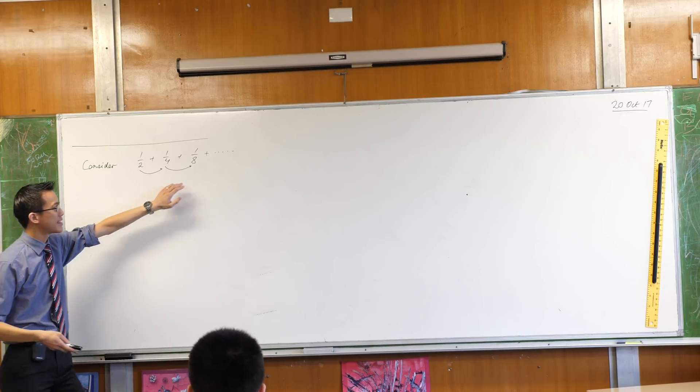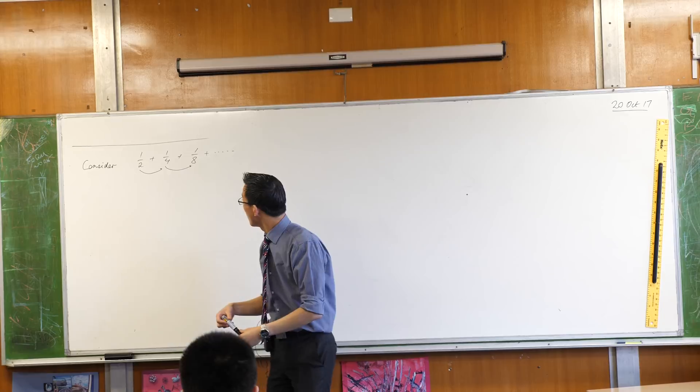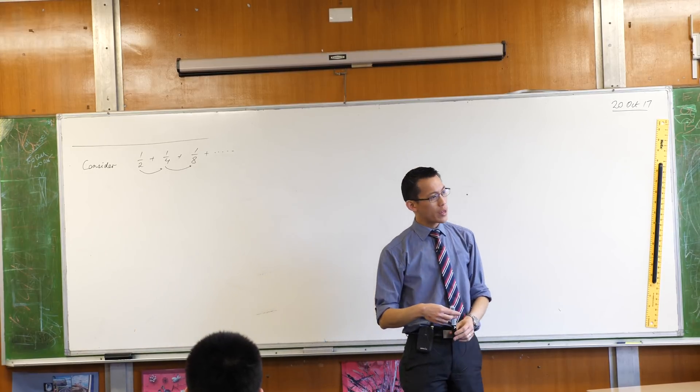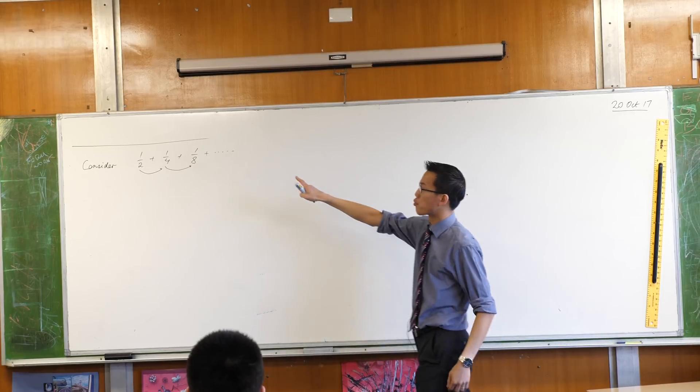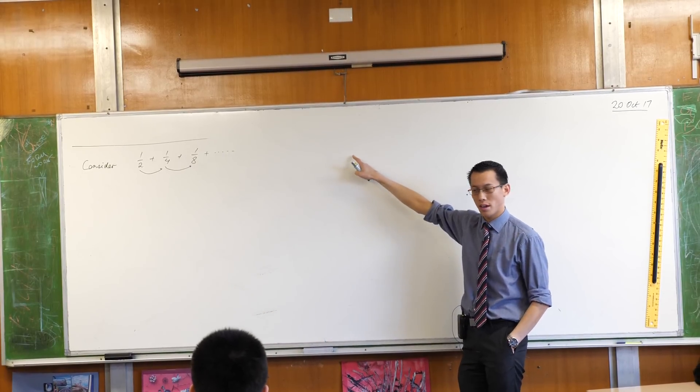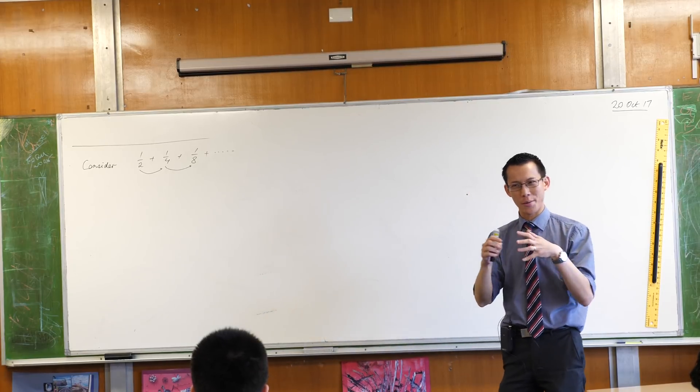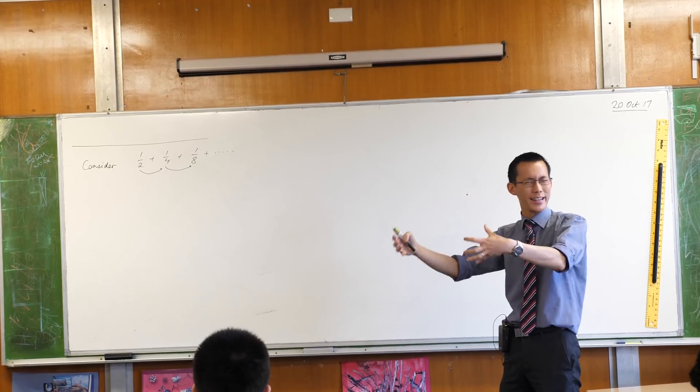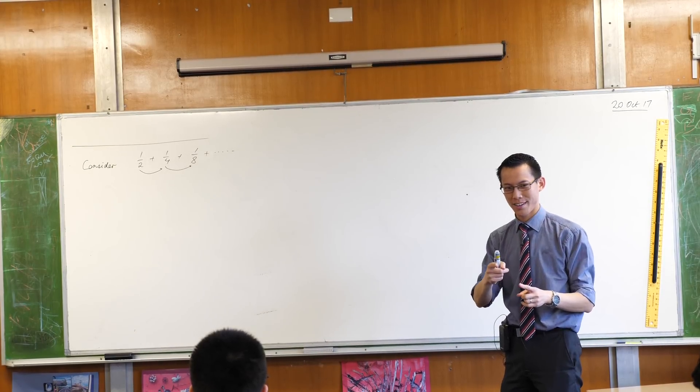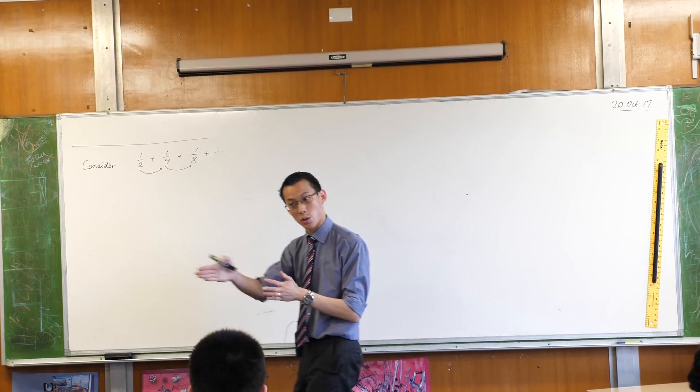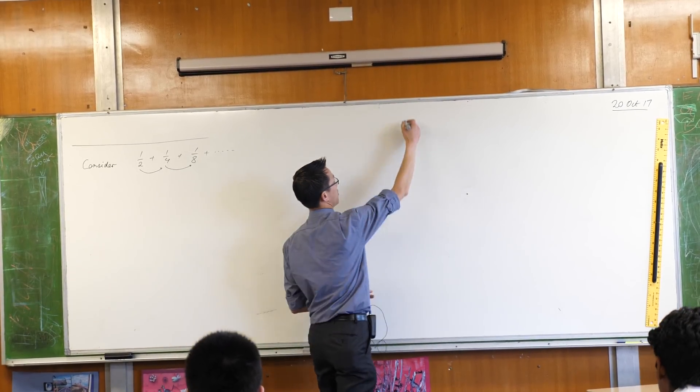So how can we say that it's equal to something, to some number? The way that we can approach this is to think about what happens to this object as we approach infinity. If only I had an area of maths that helped me work out when I approach something, but never quite get there. Or wait, I do.